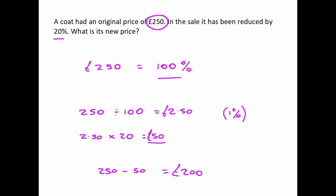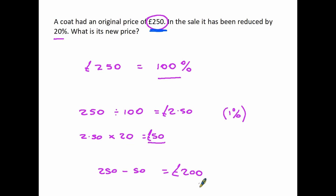So look at what we did: we took the original amount — that is the 100 percent — divided it by 100 to find 1 percent, and then multiplied by 20 to find the 20 percent. We then took that off to find the new sale price.